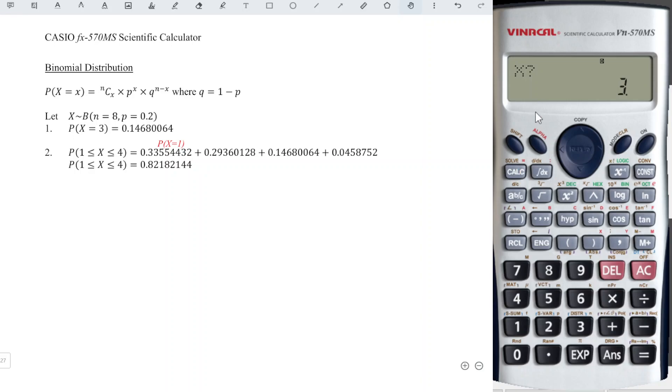So we calculate again when X is equal to 1 and press equal. Before we proceed to the second value X equal to 2, remember to store the value first because at the end we should sum up all the values that we obtain. So to store, press shift, recall to get the store, and we press the button containing A.